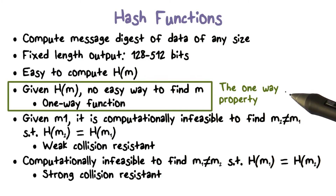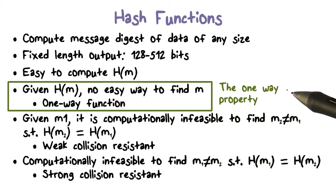If the hash function is not one-way, then the attacker, being able to intercept the hash value being transmitted, can then find the input that computes the hash value. And the input would include the secret value. That is, the attacker would be able to obtain the secret value. Therefore, this one-way property is extremely important.